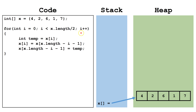At the end of the loop, we increment the counter variable i by 1. Inside the loop, we start by declaring a temp variable and copying the value from x[i] into it. Next, we copy the value from the index opposite x[i] into x[i]. And then finally, we copy the value from temp into the index opposite x[i].